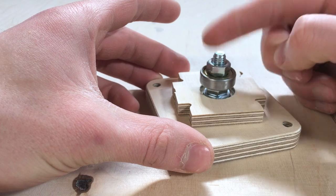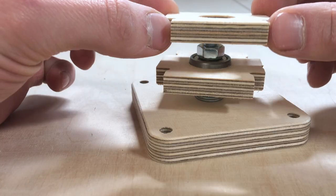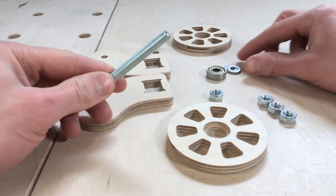Install the bearing and secure it in place by adding another M8 nut. Then I could attach the other bearing holder part. The main axis was done and I could assemble the wheel.